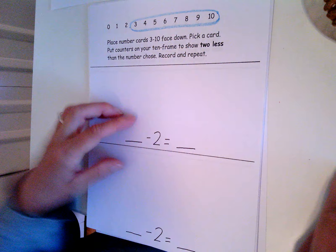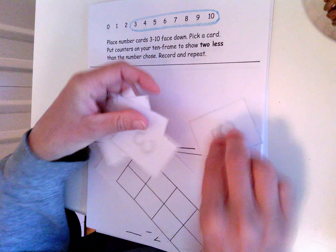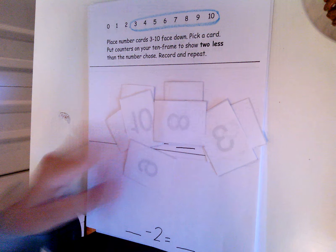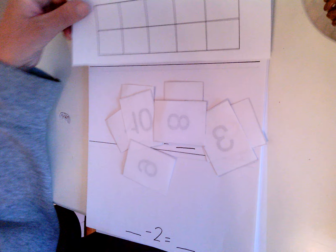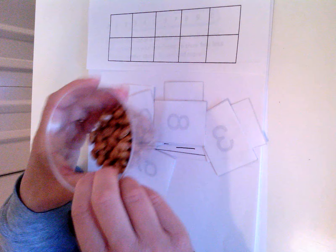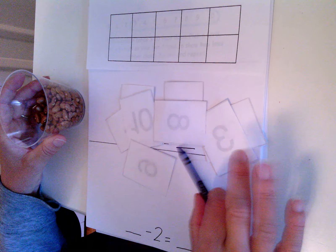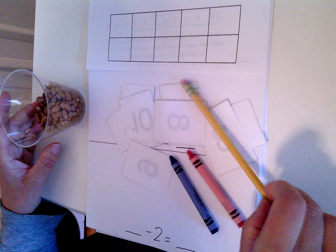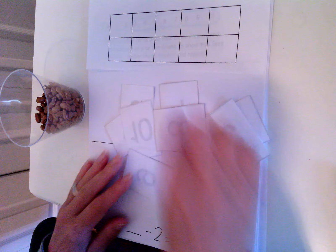You're going to put them face down so you can't see the numbers. You also need a ten-frame, your counters, crayons, and a pencil. We're going to pick a card - remember, close your eyes if you can see through.